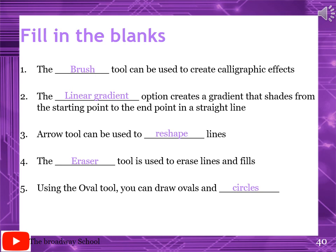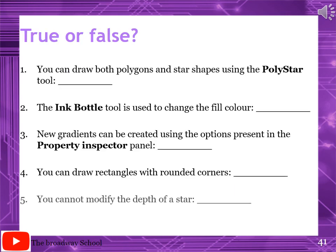The eraser tool is used to erase lines and fills. Using the oval tool, you can draw ovals and circles. True/False statements: you can draw both polygons and star shapes using the poly star tool - True. The ink bottle tool is used to change the fill color - False. New gradients can be created using the options in the property inspector panel - False, it is done from the color palette. You can draw rectangles with rounded corners - True. You cannot modify the depth of a star - False, you can modify it.